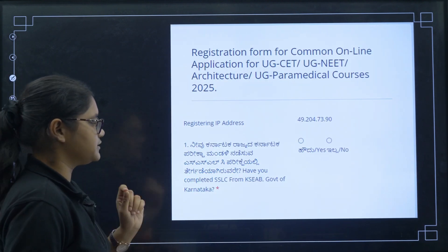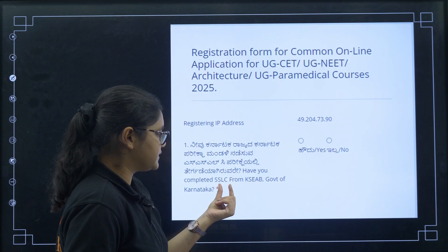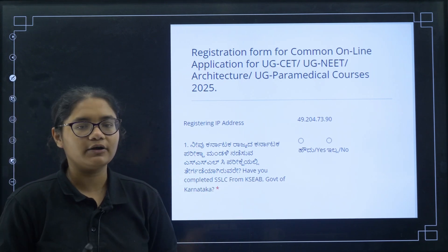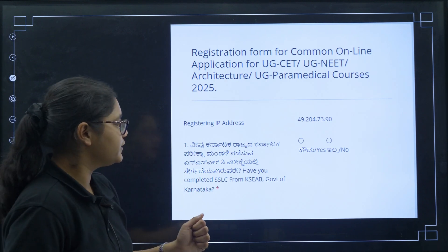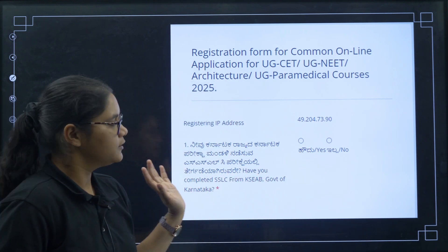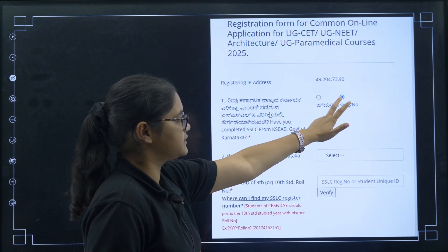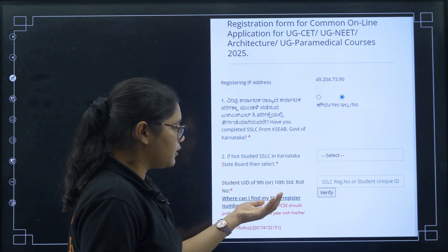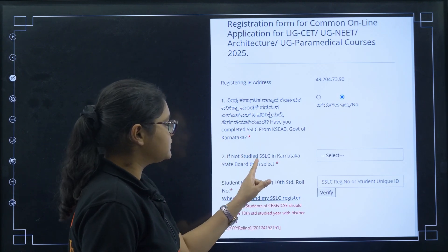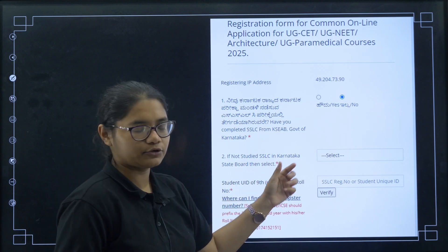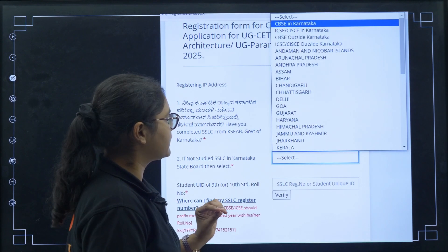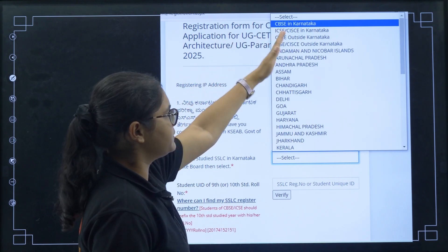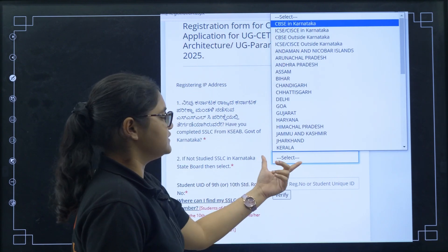Once you click 'Proceed to registration for new user,' you will be directed to a page where the first question asked is: have you completed SSLC from the KCAB Government of Karnataka? Select yes or no. If you select no, you will get an option to choose your board — such as CBSE in Karnataka, ICSE in Karnataka, or CBSE outside Karnataka — so select whichever applies to you.